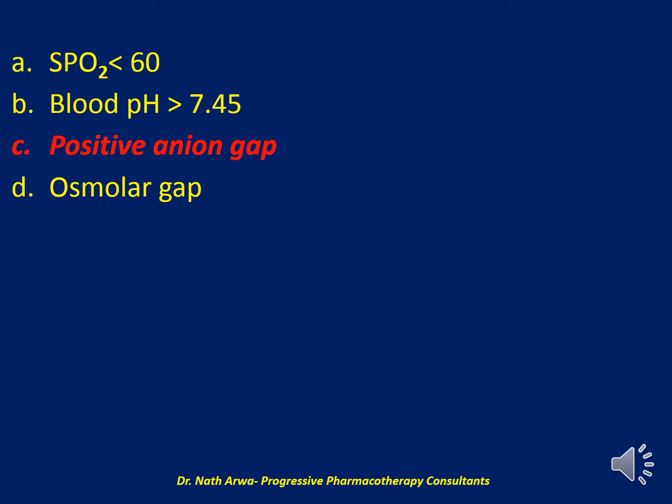After the total iron binding capacity is exceeded, free iron distributes widely into many tissues, and it exerts oxidative stress and interruption in cellular respiration. That leads to a state of acidosis and not alkalosis, so B becomes wrong. I'd just like to add that desferrioxamine chelates the ferric ions Fe3+, and not ferrous ions Fe2+.